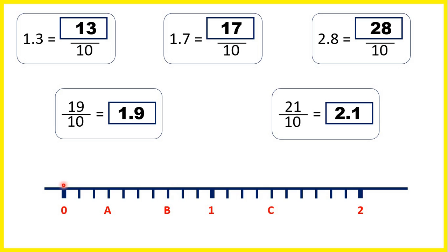For A, we have 1, 2, 3 lines. So that's 3 tenths, or 0.3.